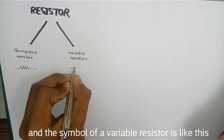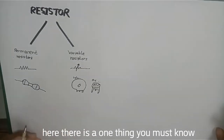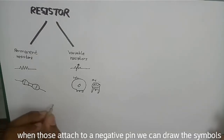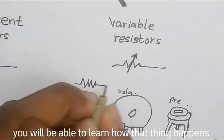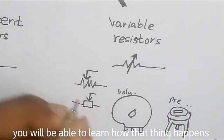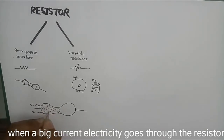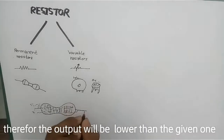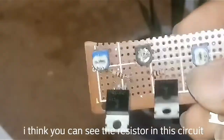This is the first time we are going to talk about the volume control and preset. This is the second time we are going to talk about the circuit symbol. We are going to talk about current electricity. You can use the current system, and this system will be available for many hours. We can use the current system for the circuit.